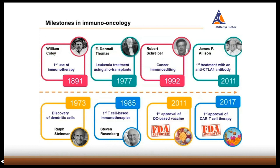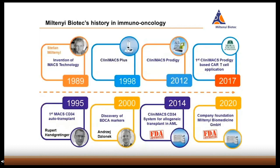Immuno-oncology has come a long way. Defining moments and key players in immuno-oncology research as well as first steps in immunotherapy go as far back as 1891. Pioneer William Coley, for example, first understood that the immune system can fight cancer and used bacteria to induce an anti-tumor immune response. And after a series of immuno-oncology milestones, we got our first FDA-approved CAR-T cell therapy in 2017. Miltenyi Biotech also has its own immuno-oncology history and milestones since its founding back in 1989. The game-changing potential of MACS technology was not only immediately adopted by pioneering researchers, but also led to new internal developments, finally culminating in the foundation of Miltenyi Biomedicine GmbH, which is fully dedicated to new immunotherapeutic approaches.